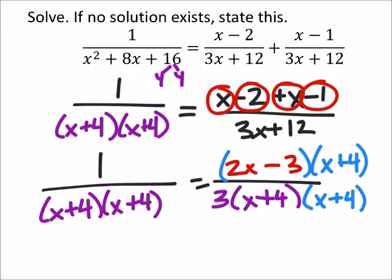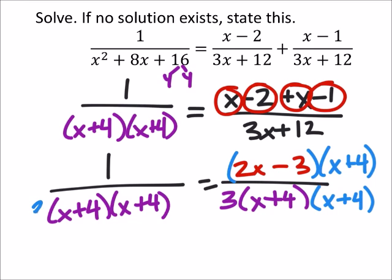But not only that, on the right side, I need a 3 as well. So, I'm going to have to multiply the 1 by 3, which is going to change this expression just a little bit. I've got 3 equals 2x minus 3 times x plus 4.